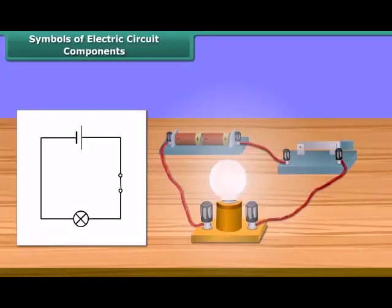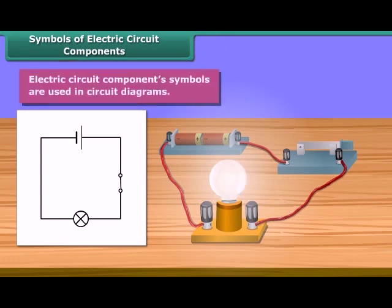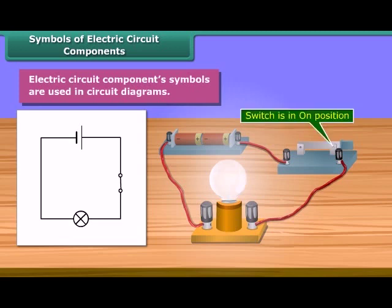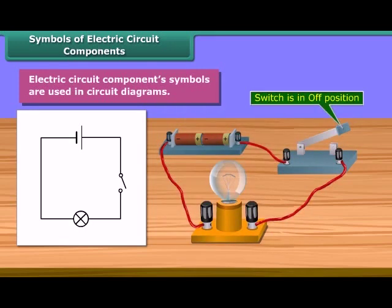Electric circuit component symbols are used to make circuit diagrams. It is much easier to represent a circuit diagram using symbols. This is the symbol of a switch in the on position. This one is in the off position.